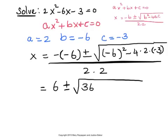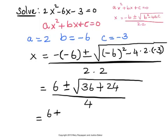Now, look at the next one. Minus 4 times 2 times negative 3. So there are two negative signs in the product, and so negative times negative will give us a positive. Try to multiply the numbers now. 4 times 2 is 8. 8 times 3 would be 24, all over 4, and that would be 6 plus or minus square root of 36 plus 24 will give you 60, all over 4.